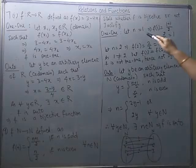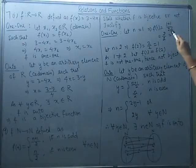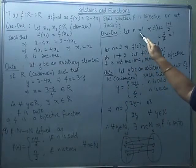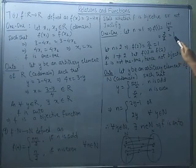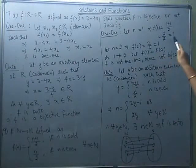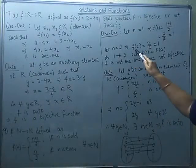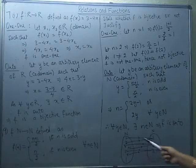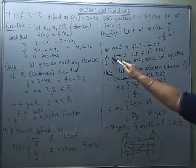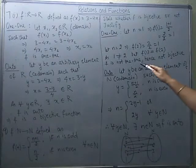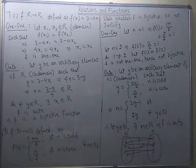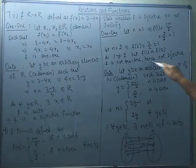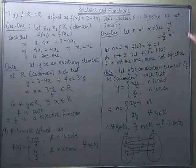Here is one such example. If n = 1 (odd), then f(1) = (1+1)/2 = 2/2 = 1. If n = 2 (even), then f(2) = 2/2 = 1. So both 1 and 2 have the same image 1 — two different values of n giving the same image. Therefore the function is not one-one. Since it is not one-one, there is no need to check onto, and we conclude the function is not bijective.